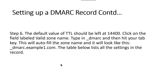Step six: the default value of TTL, or time to live, should be left at 14,400, which is 24 hours. Click on the field labeled valid zone name, type underscore DMARC, then hit your tab key and it will auto-fill the zone name for you — it will look something similar to _dmarc.example.com. The next slide will show you the settings for each record.